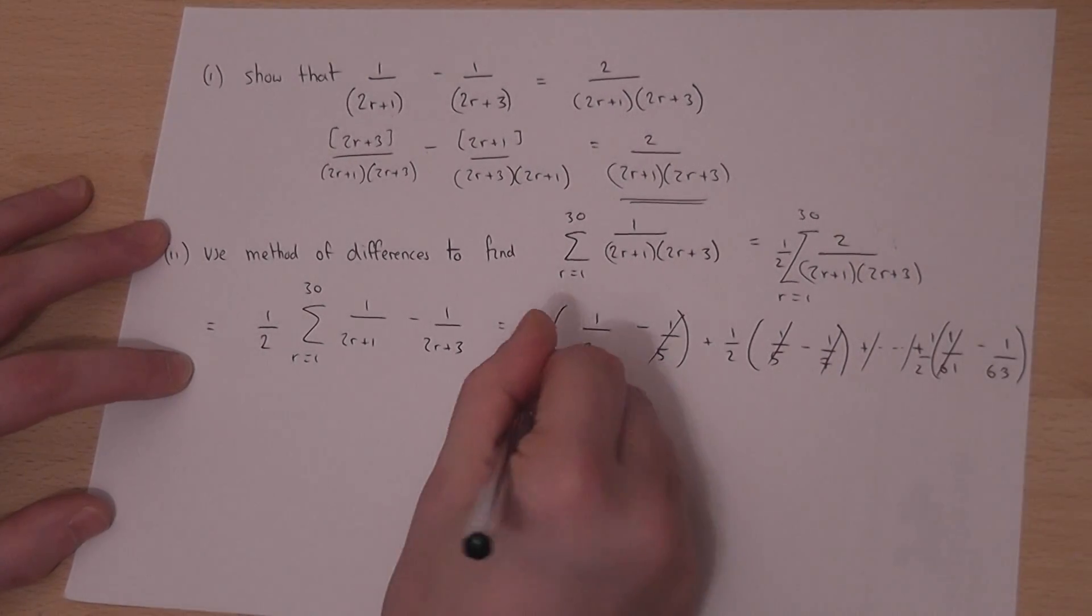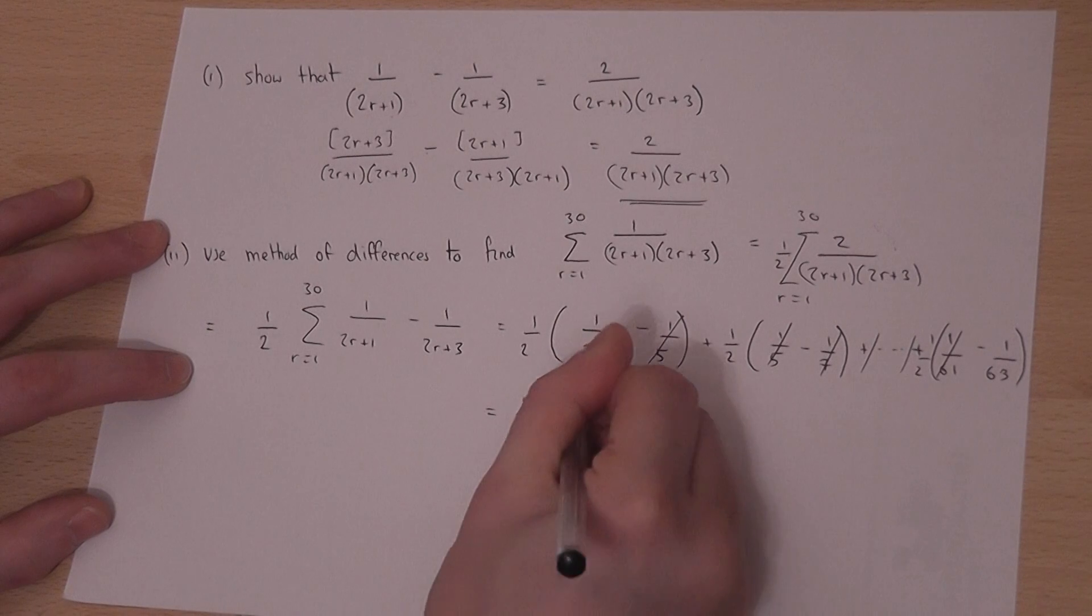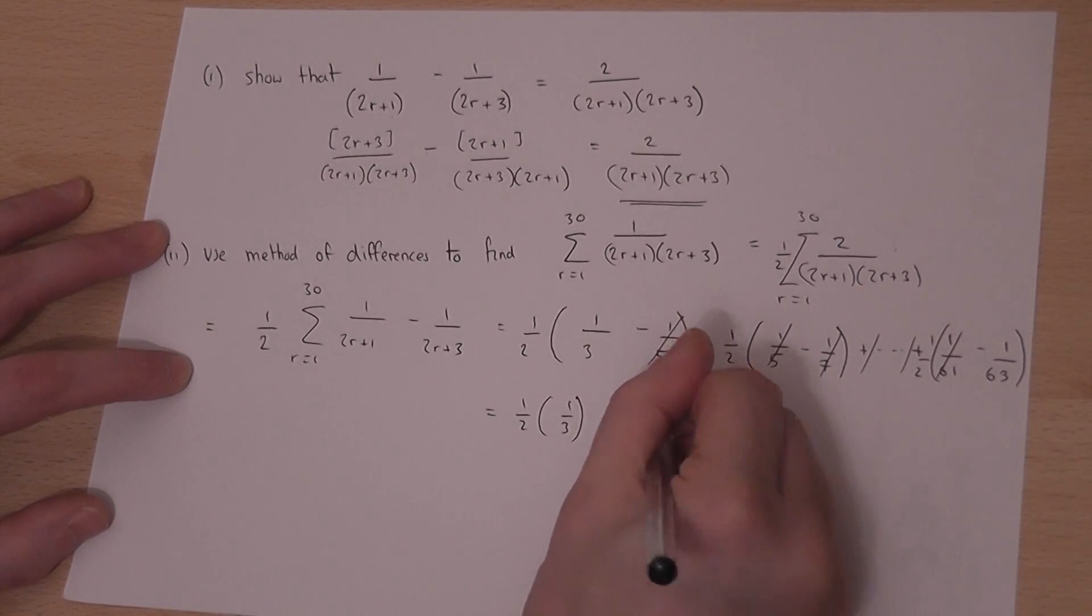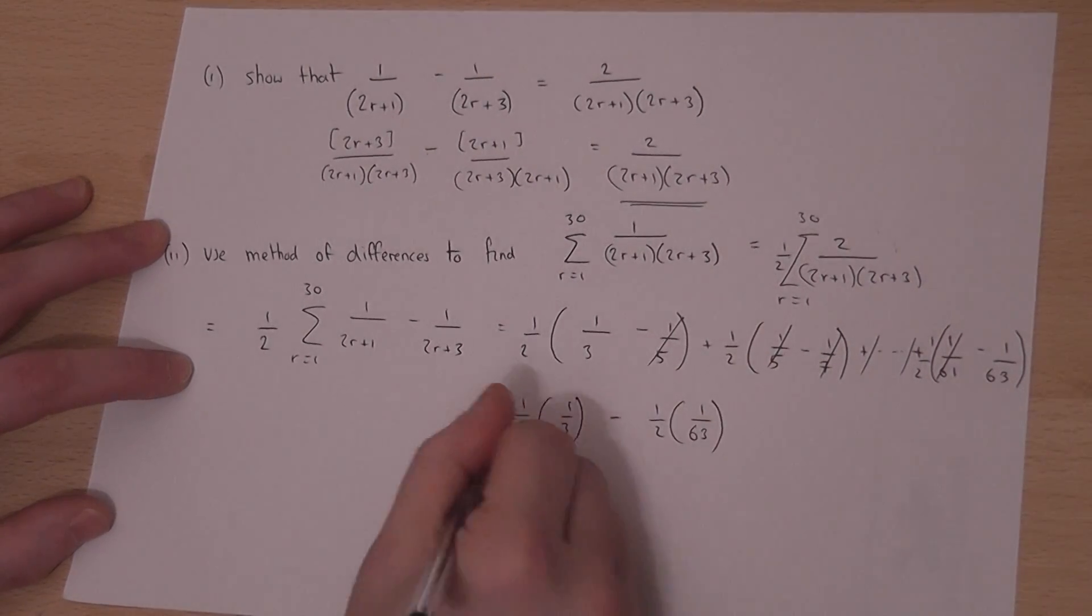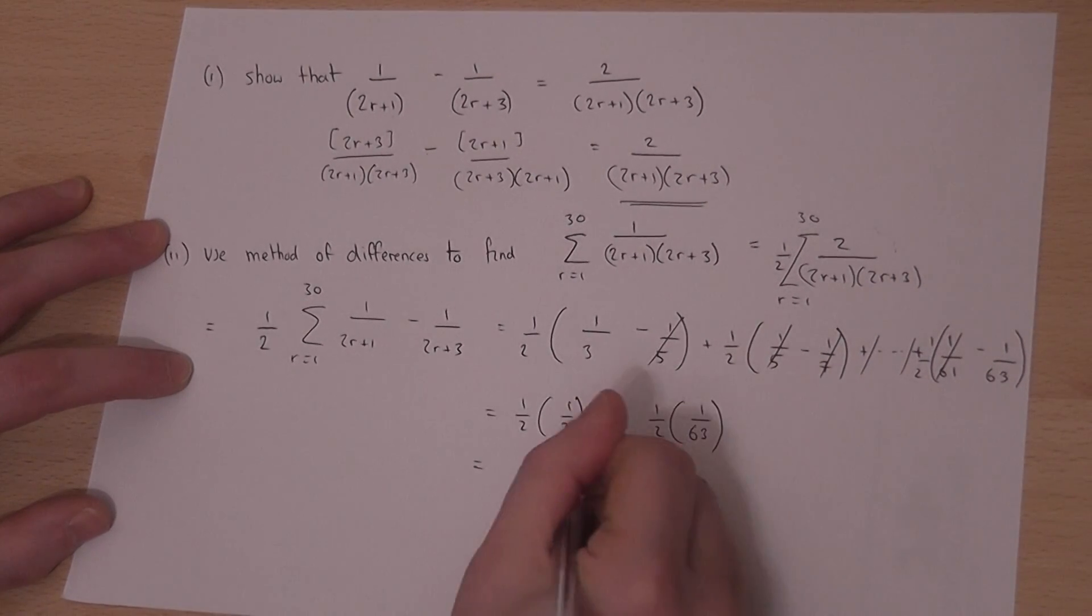And so all we're left with is a half of a third minus a half of 1 over 63. This becomes 1 over 6 take away 1 over 126.